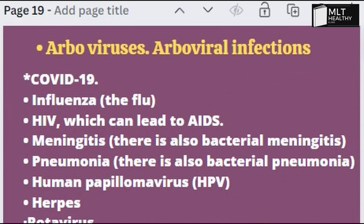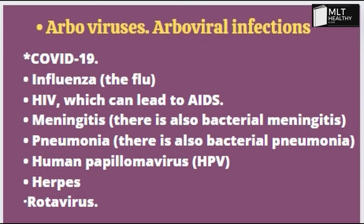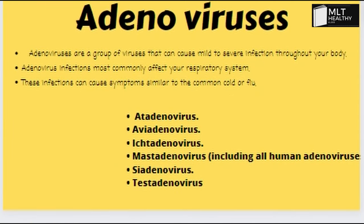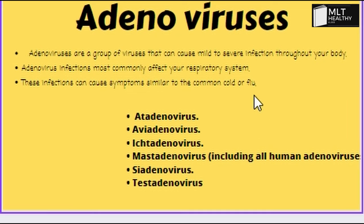Arboviruses and arboviral infections. Adenoviruses and arboviruses are different. COVID-19, influenza, flu, and HIV virus can lead to meningitis. Bacterial meningitis and viral infections are also related. Pneumonia, human papillomavirus, herpes, and rotavirus — arboviruses and viral infections are different.